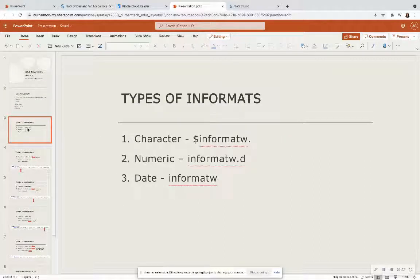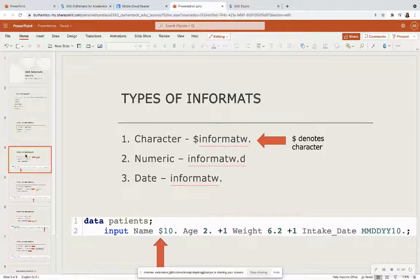So there are three types of informats, and we're going to go through each one and see an example in the actual code. We have character informats, numeric informats, and date informats. Now, character informats are always denoted by that dollar sign. So if you go back and look at my Lesson 5 video, we talk a little bit about character variables and the input statement.